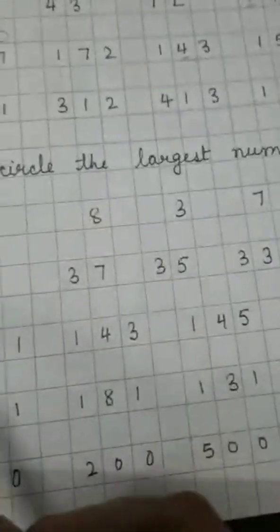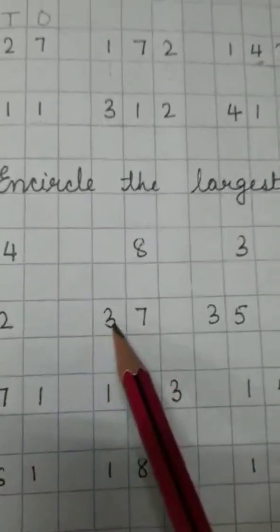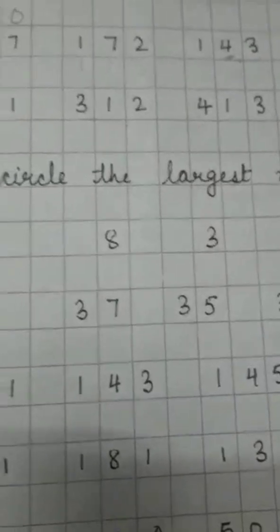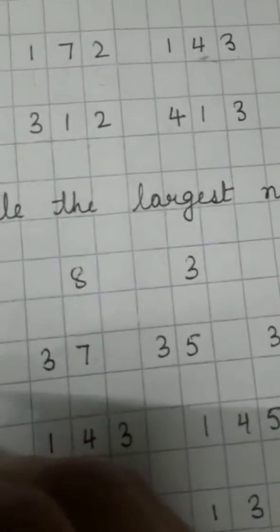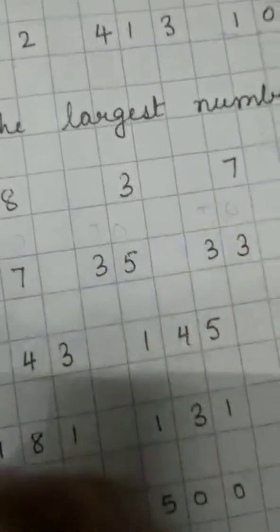Now next question is 3, 2, 32, then 37, 35, 33. Now tell me children,